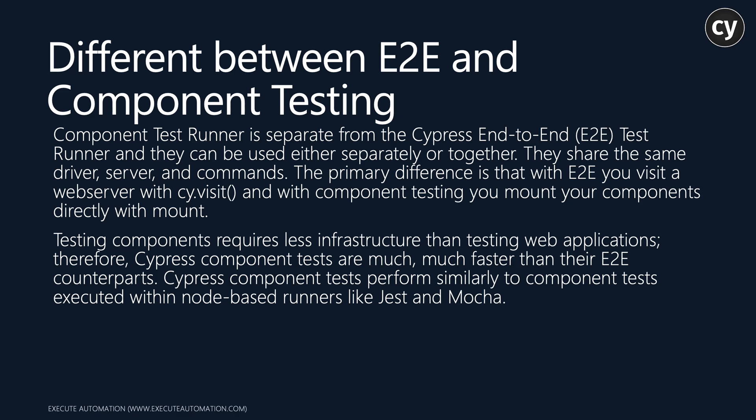What is the difference between end-to-end testing and component testing? Component test runners are separate from the Cypress end-to-end test runner — the runner itself looks a bit different. They can be used separately or together but share the same driver, server, and commands. The primary difference is that with end-to-end testing you visit a web server using cy.visit, whereas with component testing you mount your component directly using the mount command.